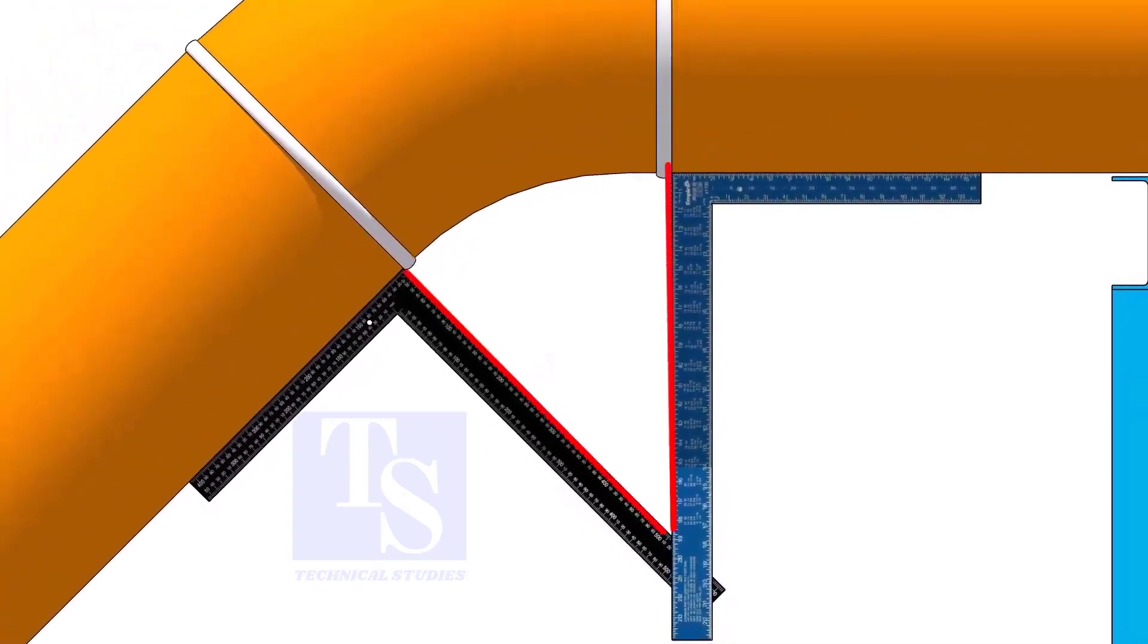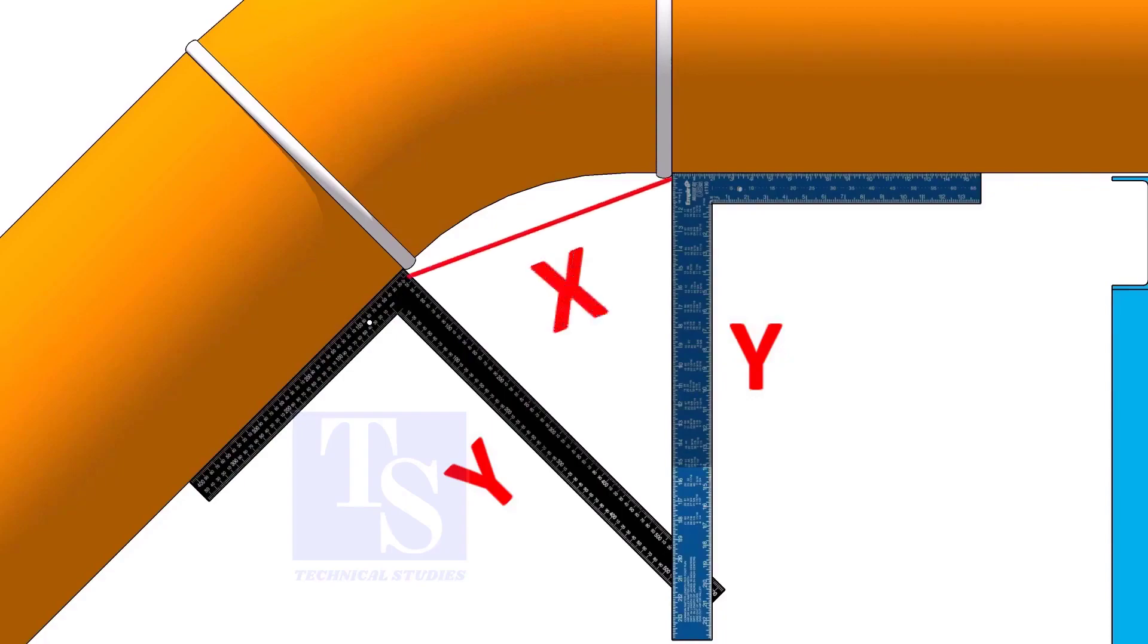Measure the distance from the pipe to the point where the right angles bisect each other. Measure only one side is enough. Now, carefully measure the distance between the corners of the right angles.